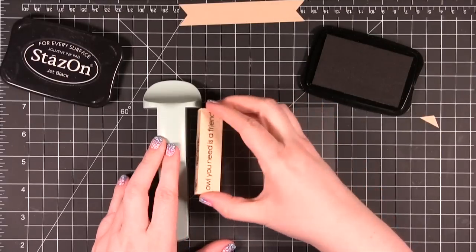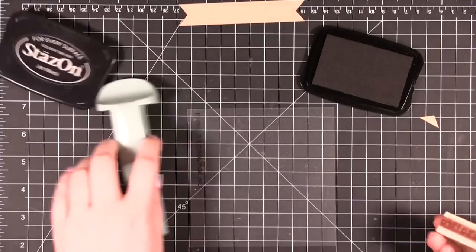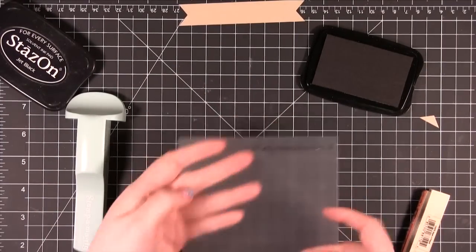Then I'm going to hold it like this and bring it in really tight and come straight down and then straight up. Then you can see the stamp on the imaging sheet.